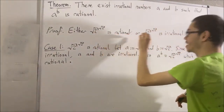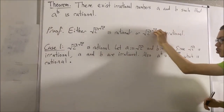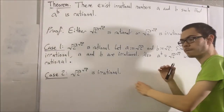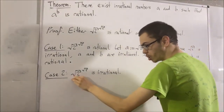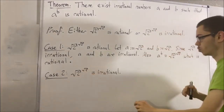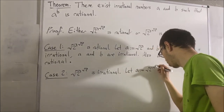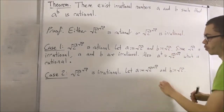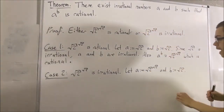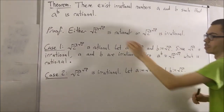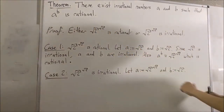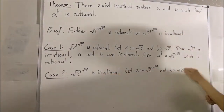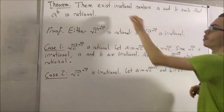Now we're going to prove the theorem in the other case, where square root of 2 to the power of square root of 2 is irrational. In this case, we're going to define a to be equal to the square root of 2 to the power of square root of 2, and we'll define b to be equal to the square root of 2. We want to show that a and b are irrational, and that a to the power of b is rational. We know that square root of 2 to the power of square root of 2 is irrational, and we know that square root of 2 is irrational. So of course, a and b are both irrational.